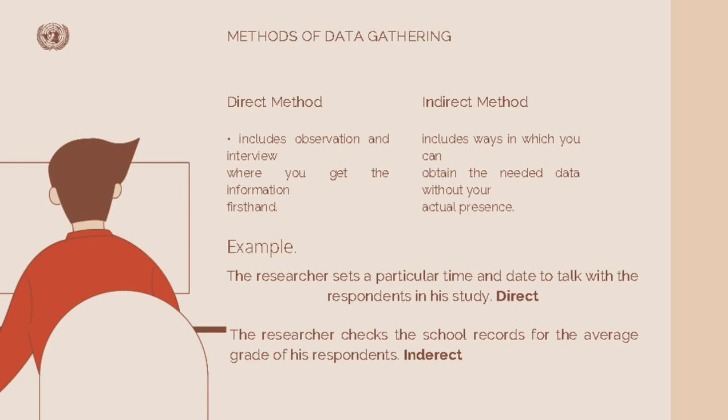For an example of indirect method, the researcher checks the school records for the average grade of his respondents. Another example of direct method: the researcher measures the actual heights of his respondents. And another example of indirect method: the researcher retrieves a journal from the library.